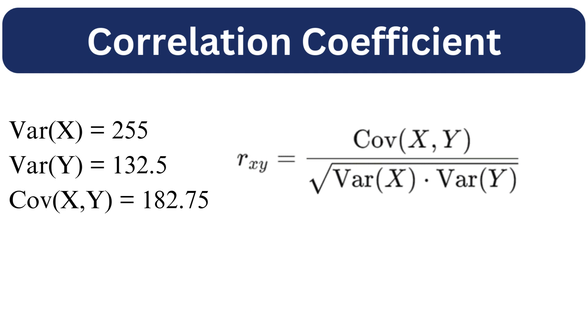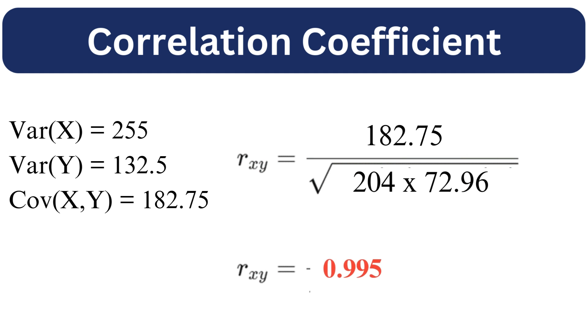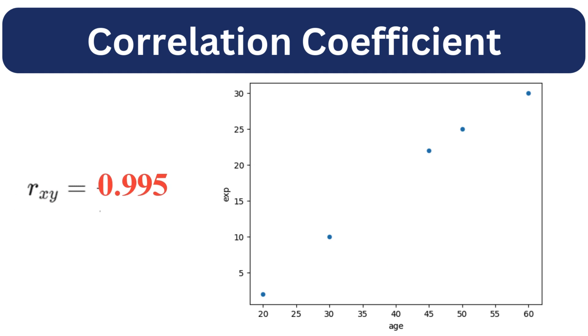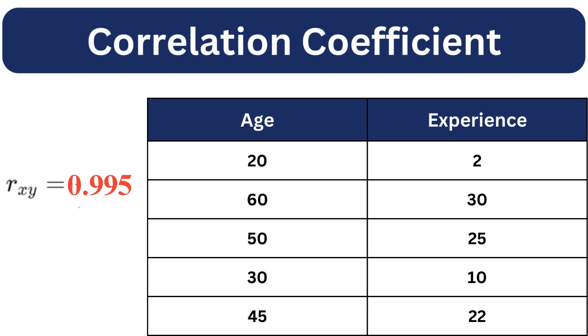In our data set, we find the R coefficient to be 0.995, indicating a strong positive correlation between age and experience. As we can see a strong positive correlation between these two variables, we can predict years of experience based on age variable.